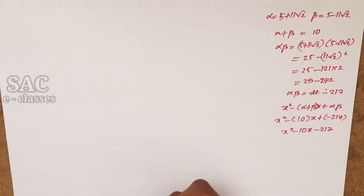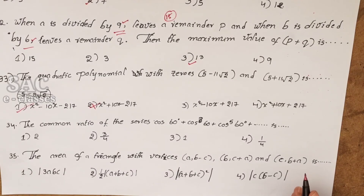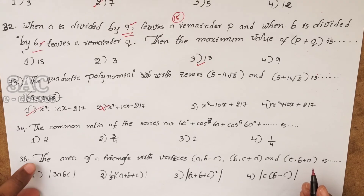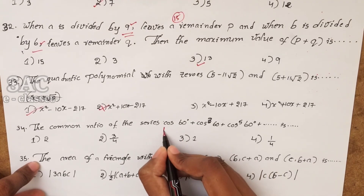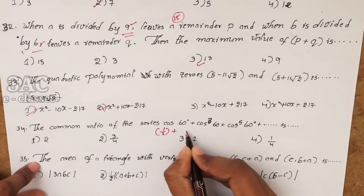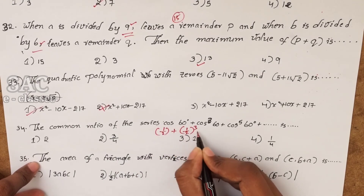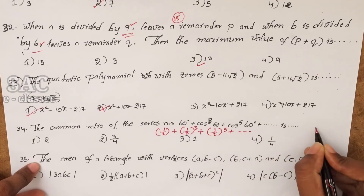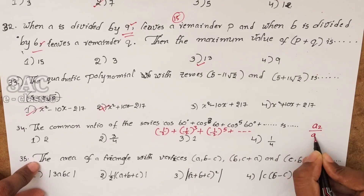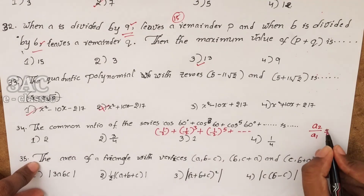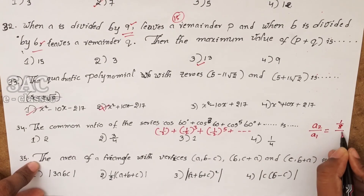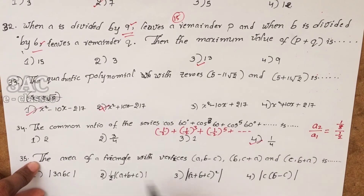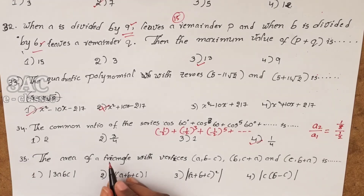Problem 34: find the common ratio of the series cos60° + cos³60° + cos⁵60° + ... This equals 1/2 + (1/2)³ + (1/2)⁵ + ... The common ratio = (second term)/(first term) = (1/8)/(1/2) = 1/4.